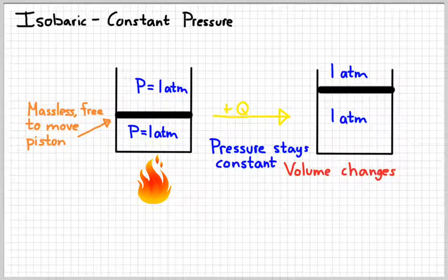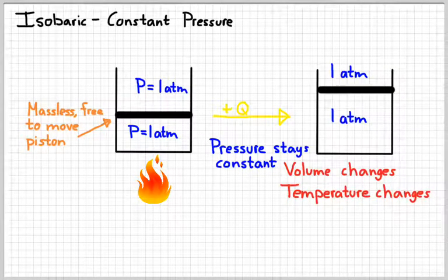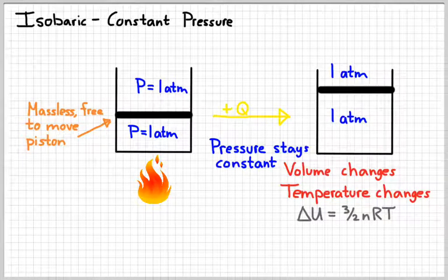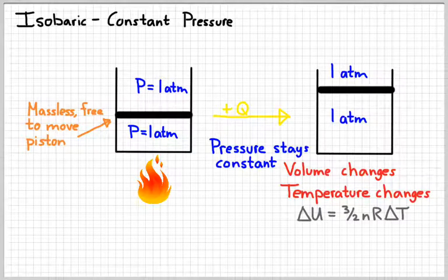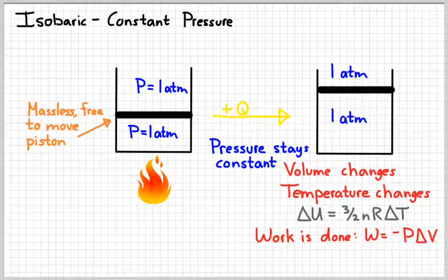Now in a process like this, the volume is obviously going to change, and the temperature has to change as well. Now it's not going to change as much as just heating this thing with the piston held in place. Some energy is going to be used to do work in expanding it, but we're still going to have some temperature change. Since we have a temperature change, we'll have some internal energy change. So we can find the internal energy change using the three halves n R delta T equation. There's also work done, and so we can find the work using the relationship work equals negative P delta V. We can use this equation because the P is constant in an isobaric process.